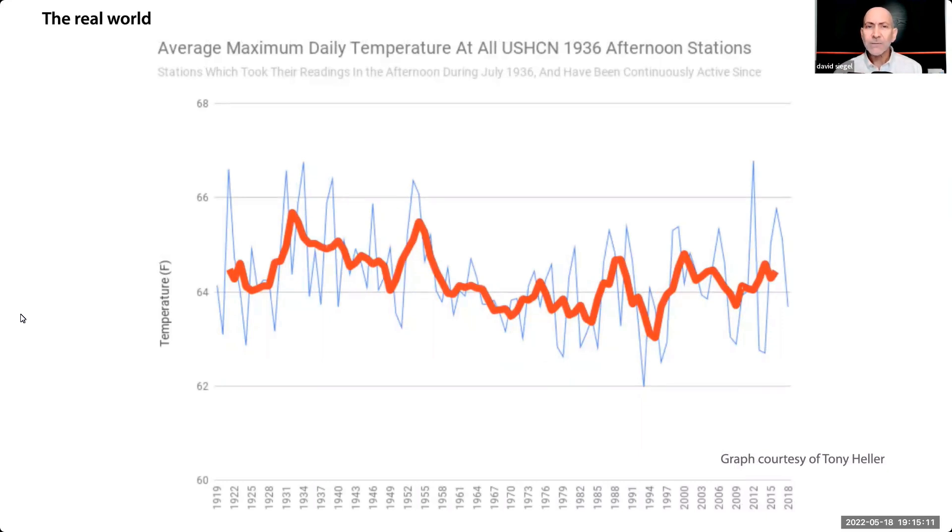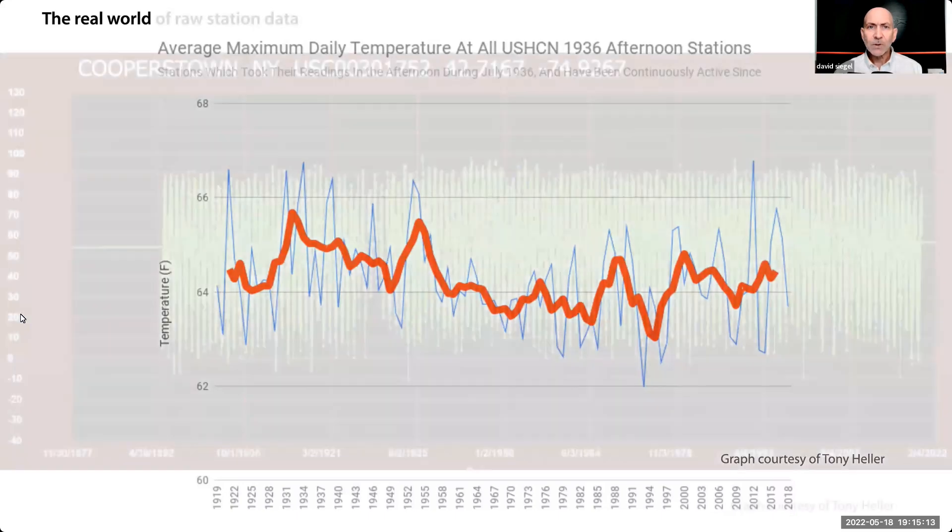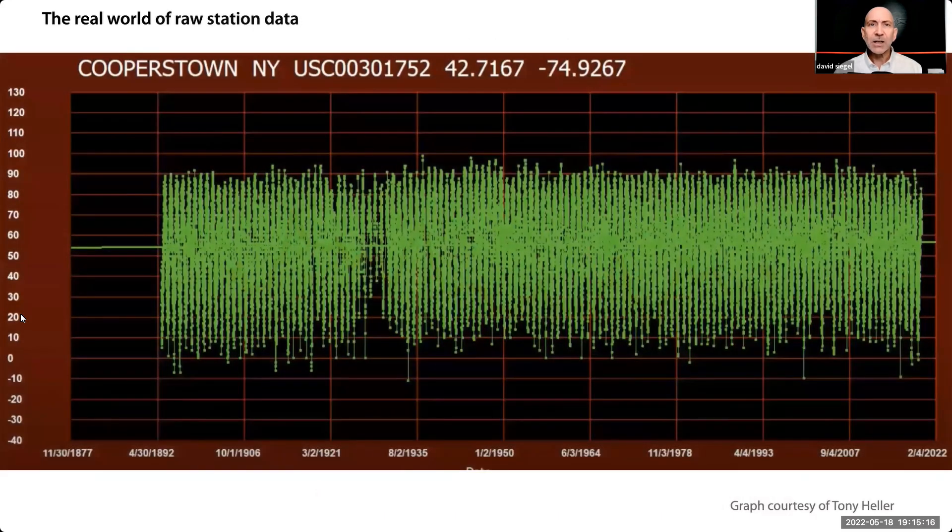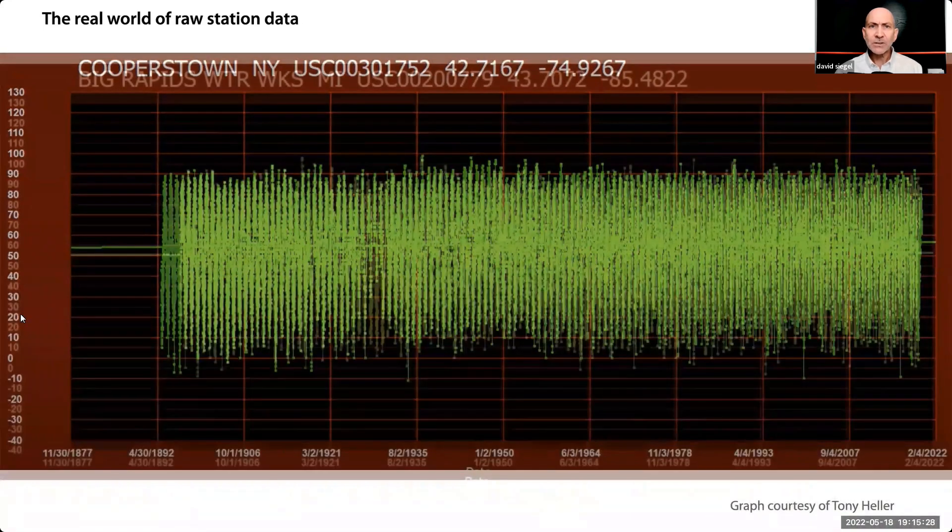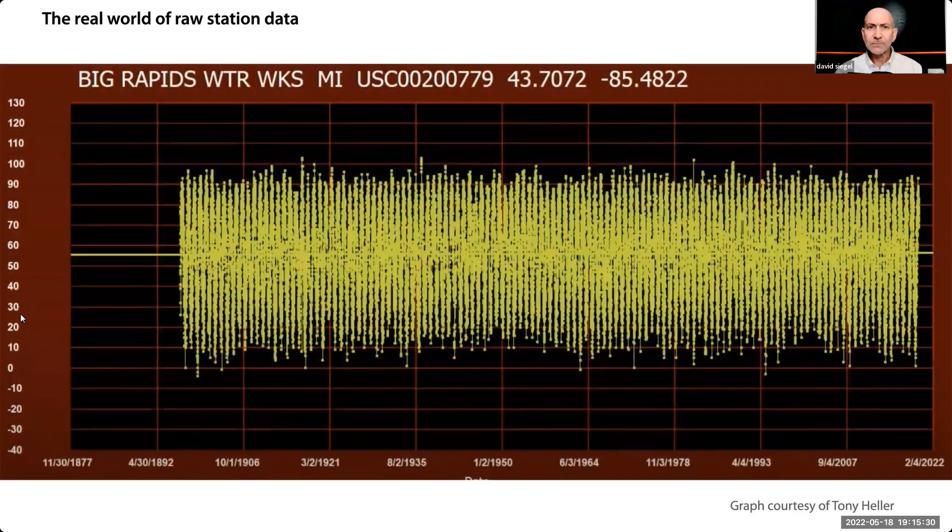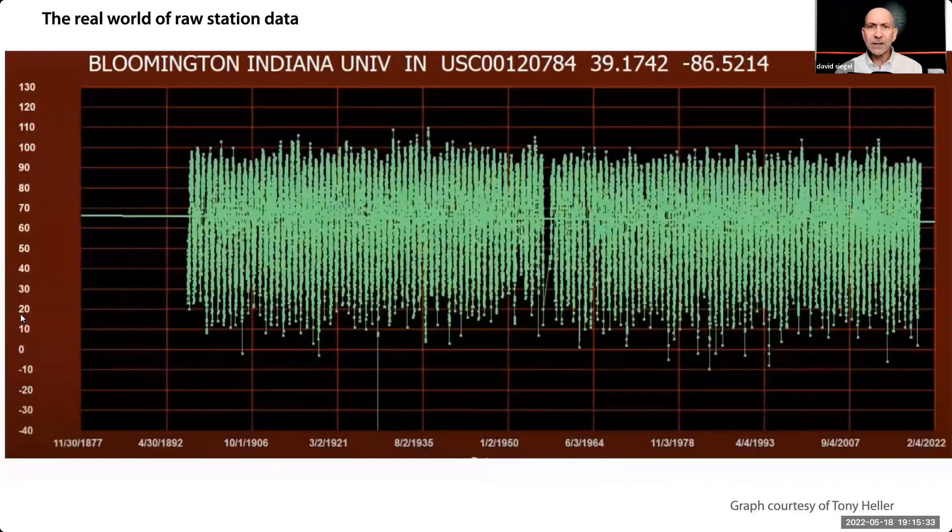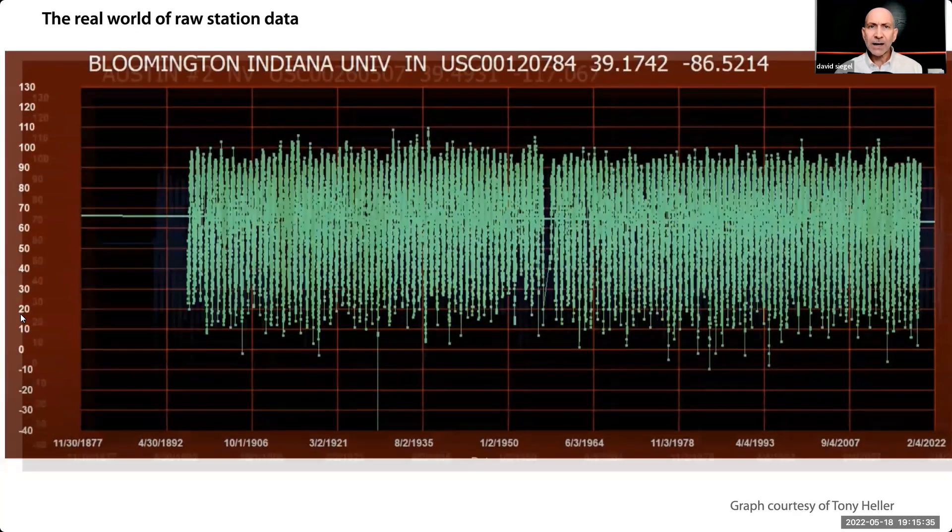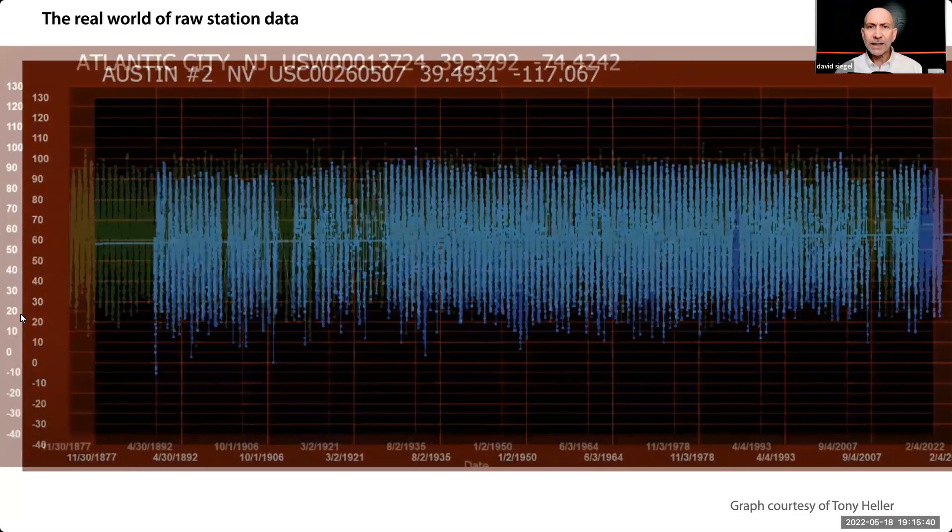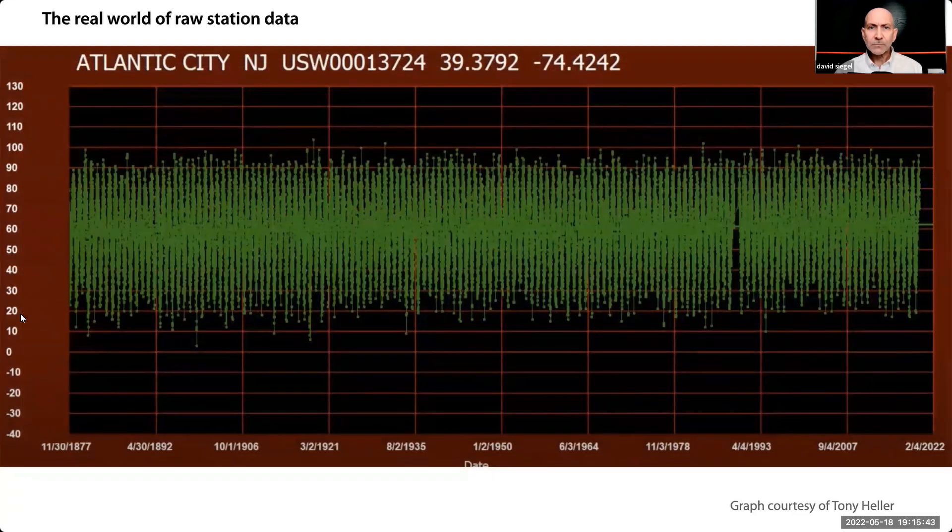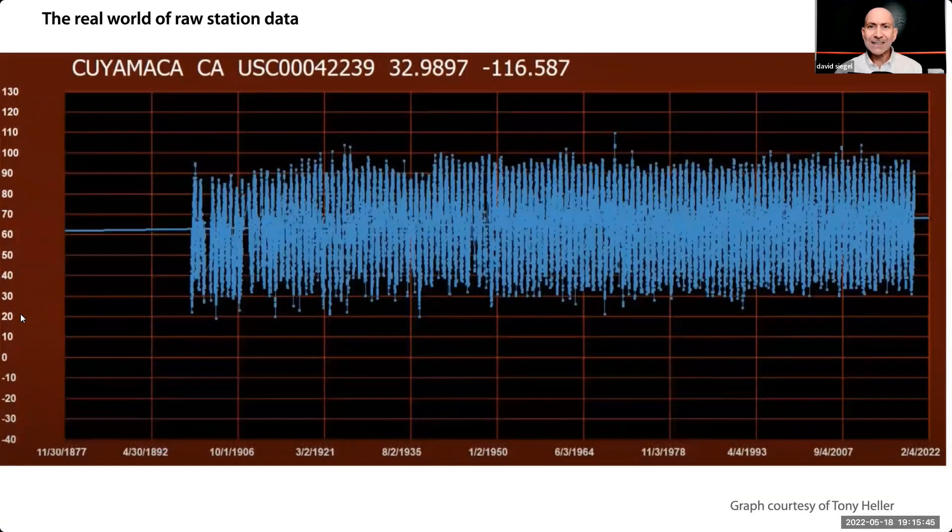Let's look at some more raw data from around the United States. This is actual thermometer data from the station at Cooperstown, New York, since 1892. These are all remote stations that haven't been urbanized. Do you see a trend that corresponds to the CO2 level? Here's Michigan, since 1896. Indiana, since 1895. Nevada, 1888. New Jersey, 1877. California, since 1896.